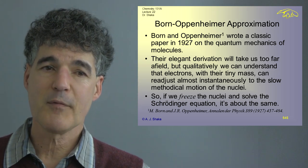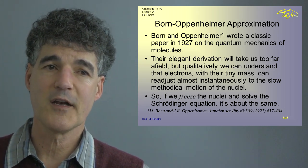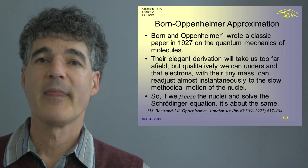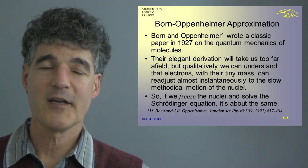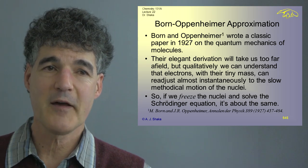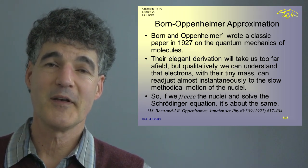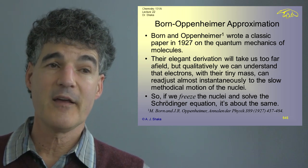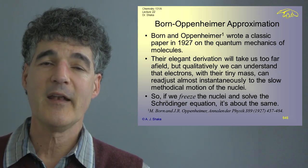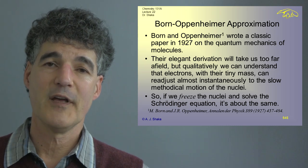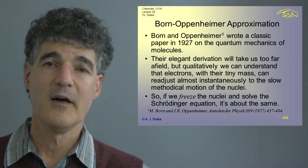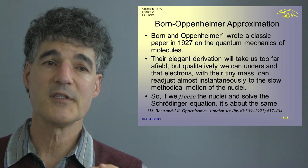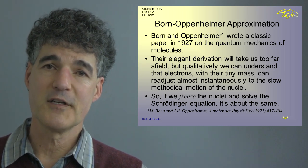Born and Oppenheimer wrote a classic paper — the reference is provided if you'd like to look it up. Unfortunately it's in German, so you'd have to look at the translation. I had to learn to read German when I got my chemistry degree. Their paper was on the quantum mechanics of molecules, and they have a very elegant derivation about why you can ignore the nuclear motion. I won't go through it because that would take at least two lectures.